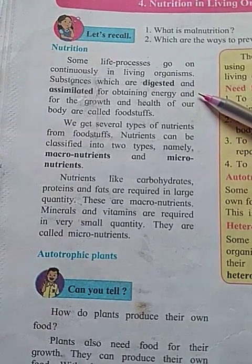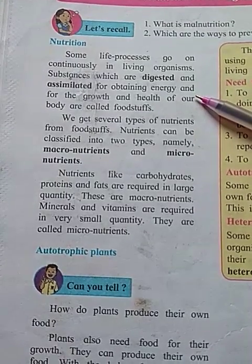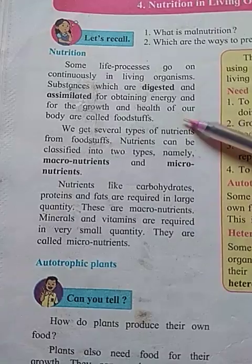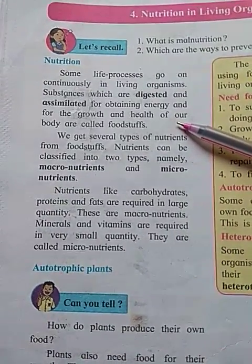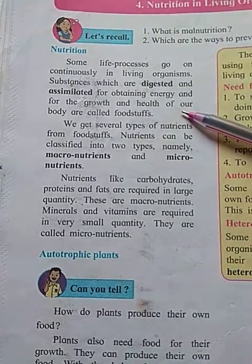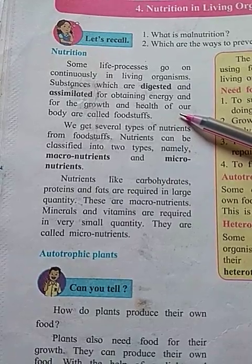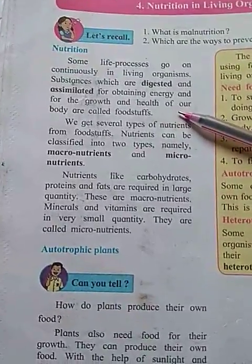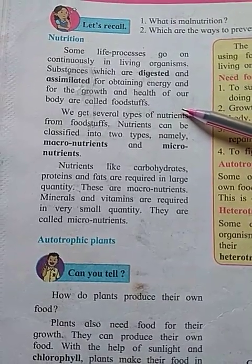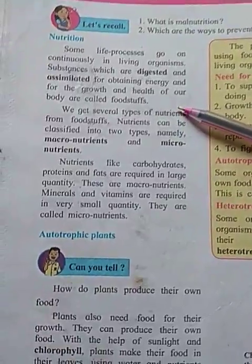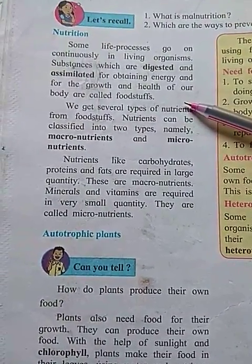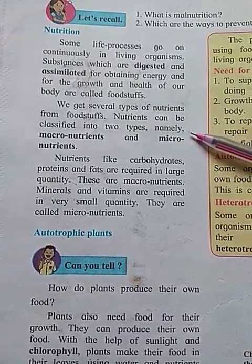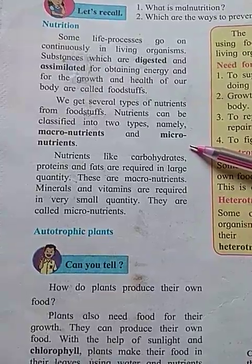Substances which are digested and assimilated for obtaining energy, for the growth and health of our body, are called foodstuff. We get several types of nutrients from foodstuff. Nutrients can be classified into two types, namely macronutrients and micronutrients.